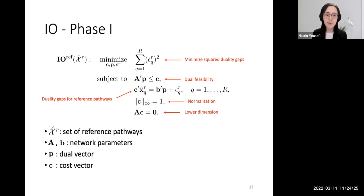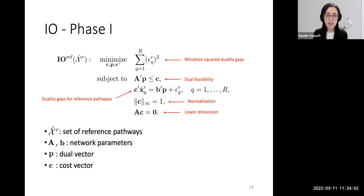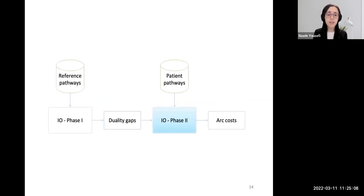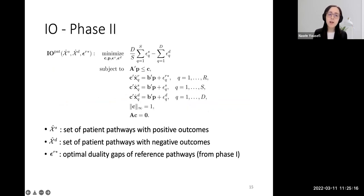To summarize, this Phase 1 formulation finds the cost vector and duality gaps that make the reference pathways as close to optimal as possible. However, the graph is usually large but there may be only a few reference pathways — two or three — so the problem can have multiple solutions with multiple cost vectors achieving the same level of optimality. That is why we have a second phase: we take the duality gaps from Phase 1 and input them to the Phase 2 inverse problem.